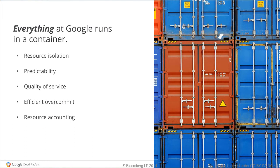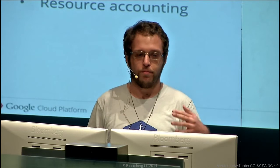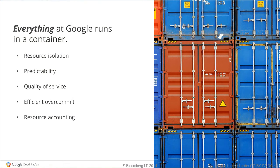Does it actually work? Yes — Google has been running everything in containers. This includes Search, Gmail, YouTube, and even our virtual machines in Google Compute Engine. It lets you isolate CPU, RAM, disk, and network from each other. You can say 'I want this much CPU,' 'I want this many replicas.' You can manage quality of service — for example, letting a low-latency user-facing job preempt a batch background processing job. You can efficiently allocate workloads across physical machines.